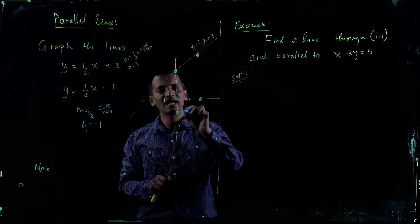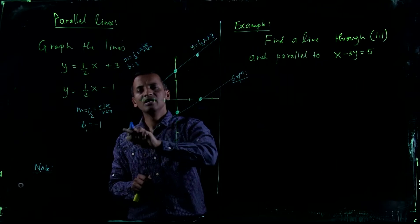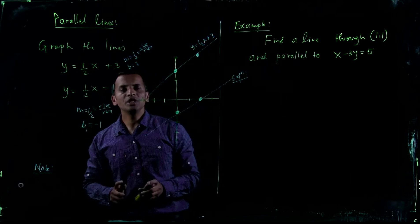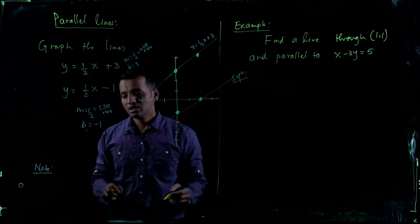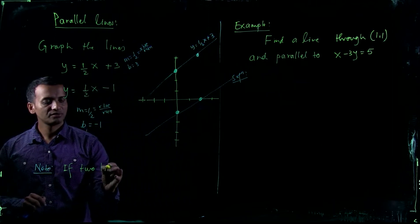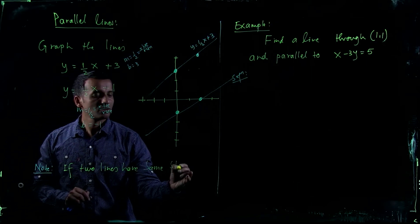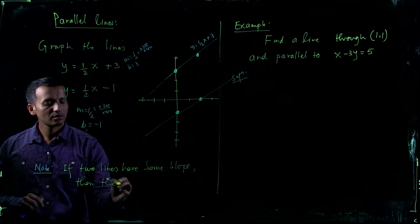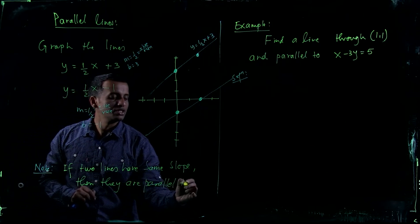If you graph this line, you will see that these two lines are parallel to each other. So if two equations have the same slope, then their graphs are parallel to each other. If two lines have the same slope, then they are parallel to each other.